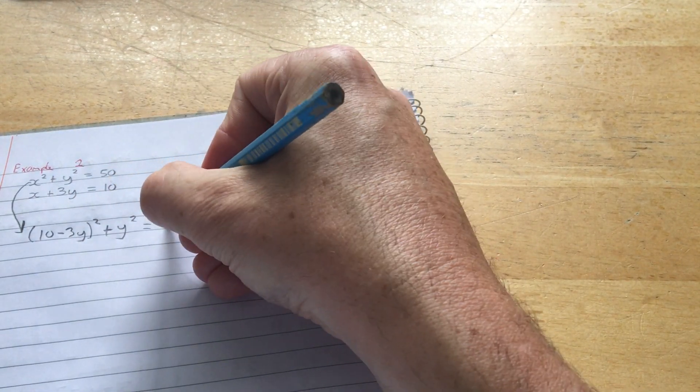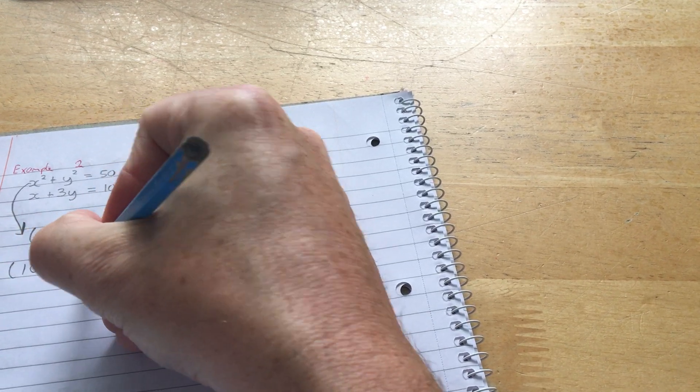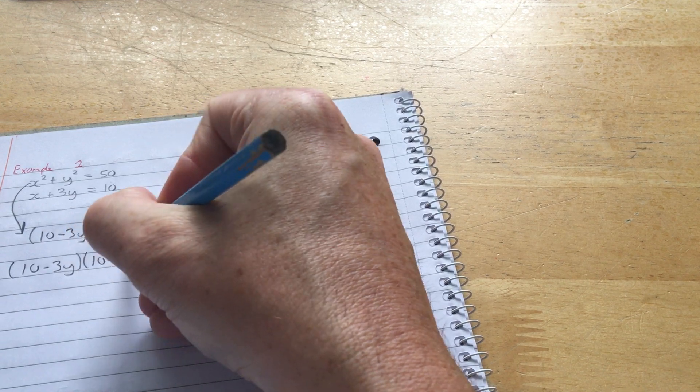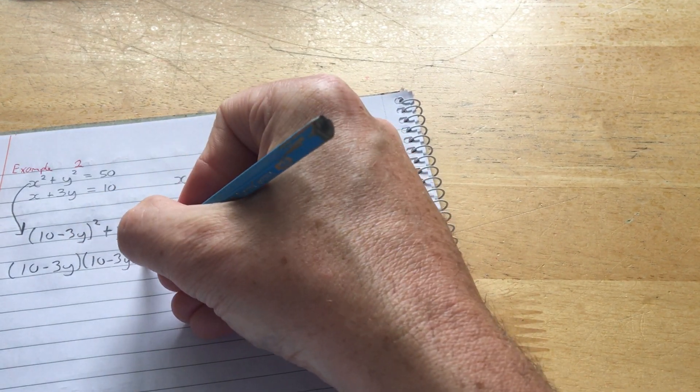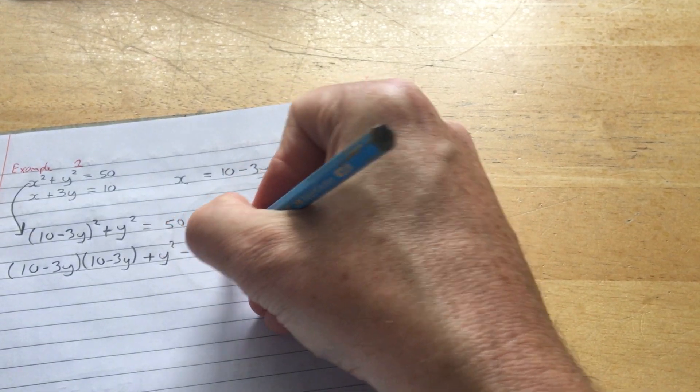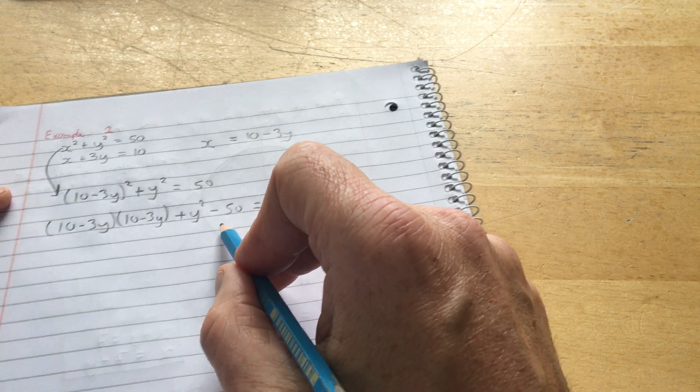It's just the substitution. I'm going to square out this bracket. 10 minus 3y times 10 minus 3y. That's what squaring means. 5 squared means 5 multiplied by 5. So 10 minus 3y squared means 10 minus 3y multiplied by 10 minus 3y. And I'm going to bring the 50 across. So the opposite of adding 50 is subtracting 50.